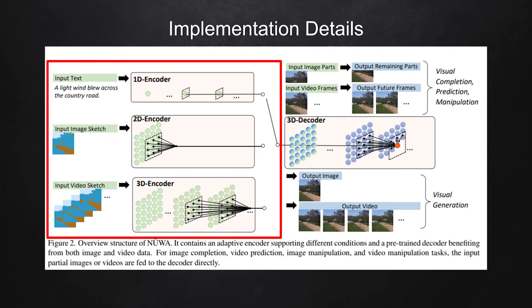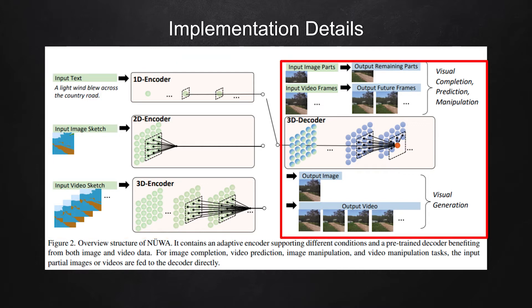The decoder produces visual representations conditioned on the embedded representation. For example, the encoder first encodes text input that says 'a light wind blew across the country road.' The embedded token representation is then used by the decoder to produce an image describing the input text sequence. This is not only restricted to image; the decoder can also generate missing images or sequence of video frames.